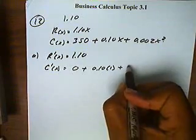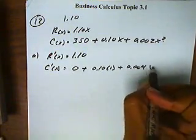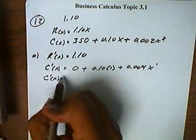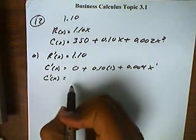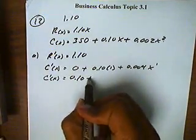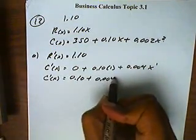And 2 times 2 is 4, so this will be 0.004x to the first power. So let's clean up the cost function, the marginal cost function. So this will be 0.10 plus 0.004x.